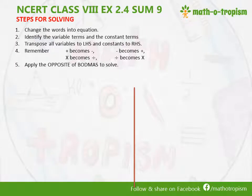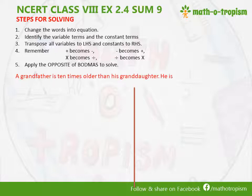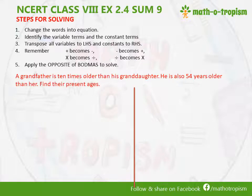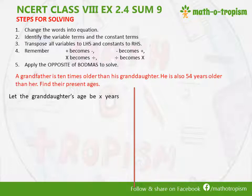The first step is changing the words into equations. A grandfather is 10 times older than his granddaughter, and he is also 54 years older than her. We have to find the ages of both. Since the grandfather's age is dependent on the granddaughter's age, we let the granddaughter's age be X years and the grandfather's age be Y years.